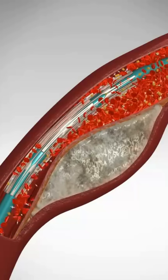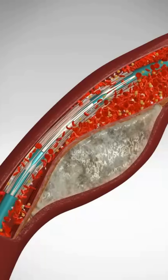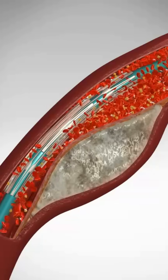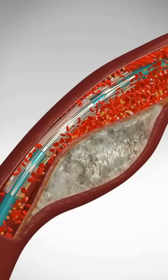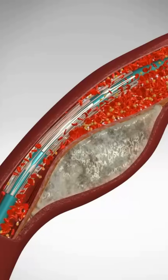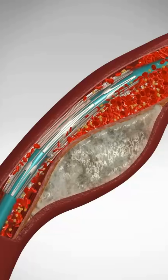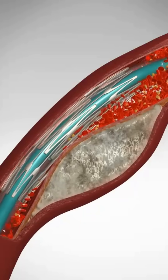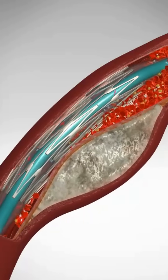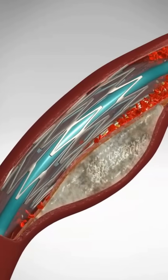Once the balloon is in place, the doctor inflates it. As the balloon expands, the stent around it expands too together. The balloon and stent squash the plaque against the walls of the artery, making more room for the blood to flow.